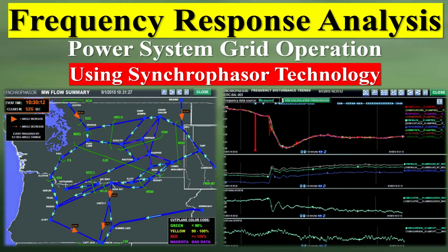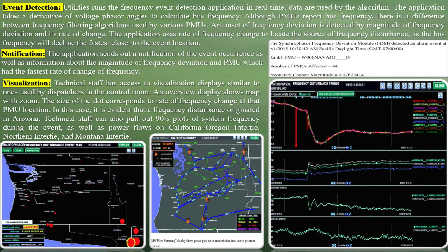Frequency response analysis — power system grid operation using synchrophasor technology, event detection. Utilities run the frequency event detection application in real-time; data are used by the algorithm. The application takes a derivative of voltage phasor angles to calculate bus frequency. Although PMUs report bus frequency, there is a difference between frequency filtering algorithms used by various PMUs. An onset of frequency deviation is detected by the magnitude of frequency deviation and its rate of change. The application uses rate of frequency change to locate the source of frequency disturbance, as bus frequency will decline fastest closer to the event location.